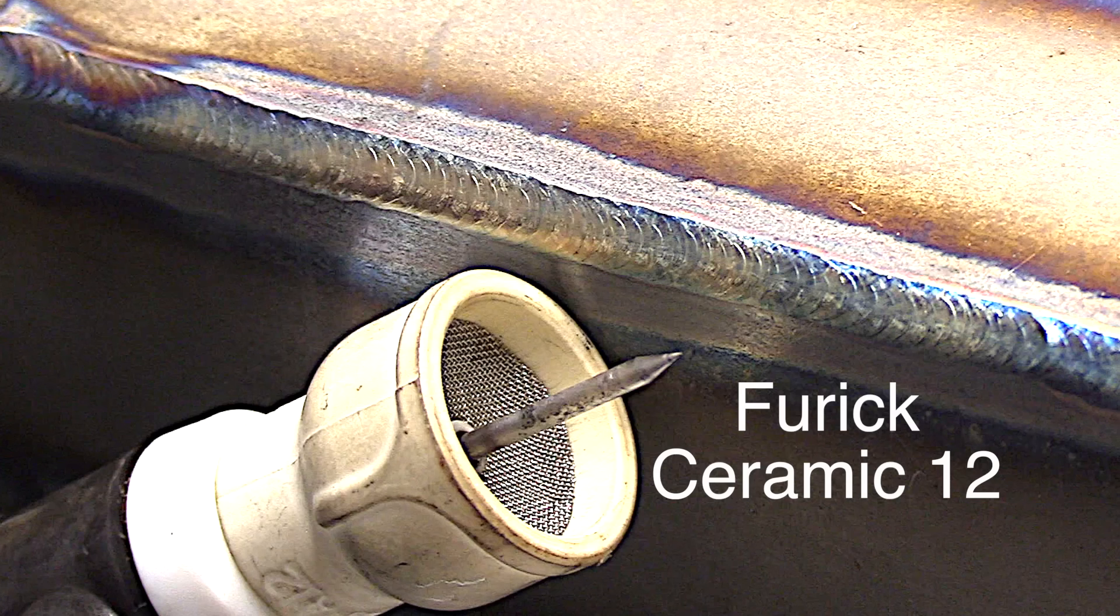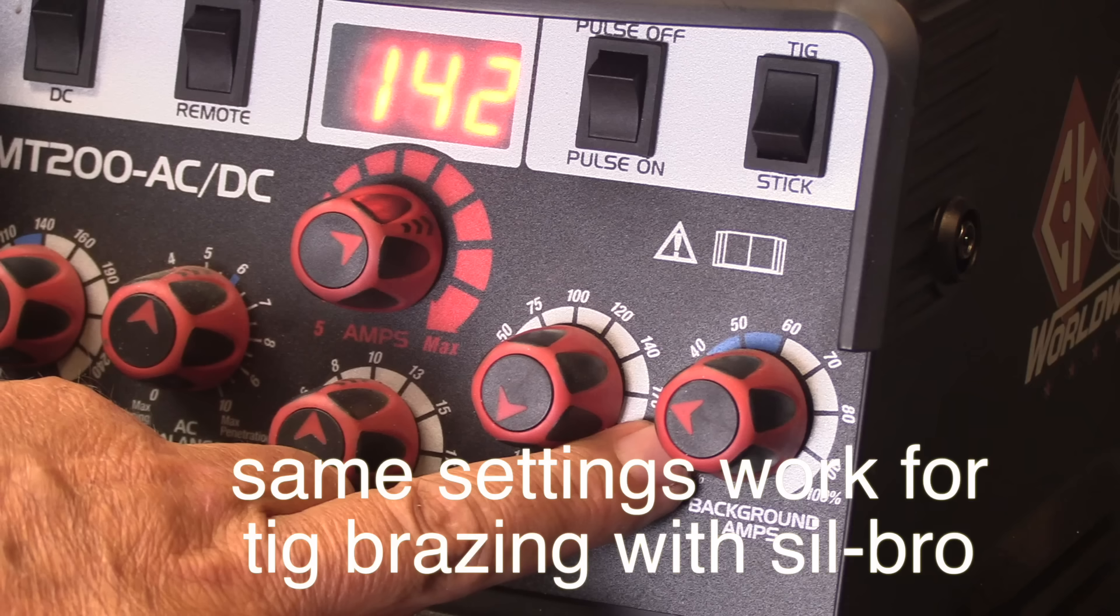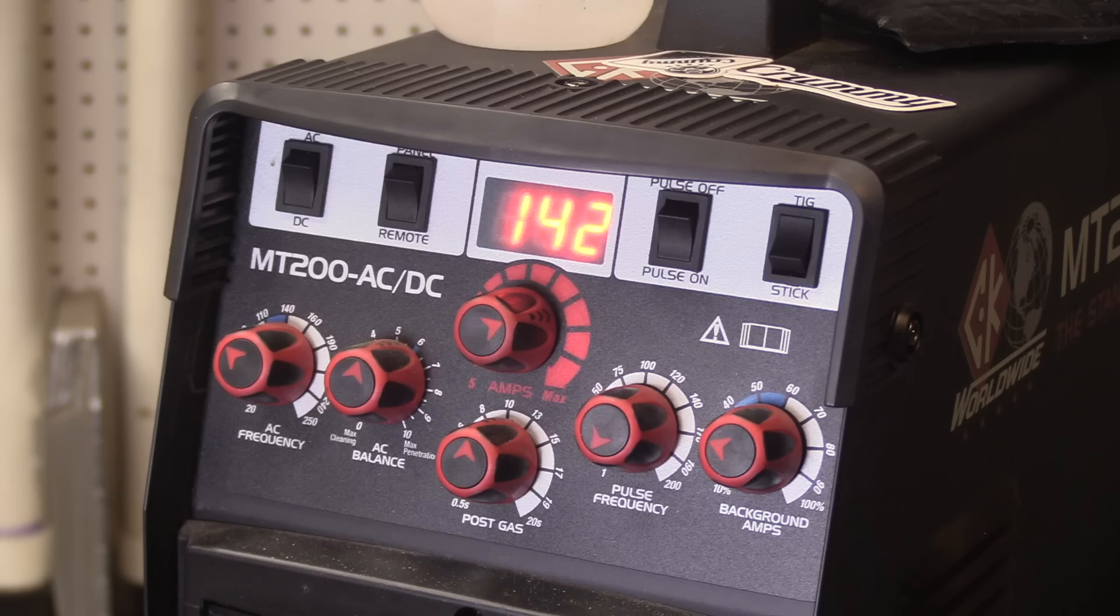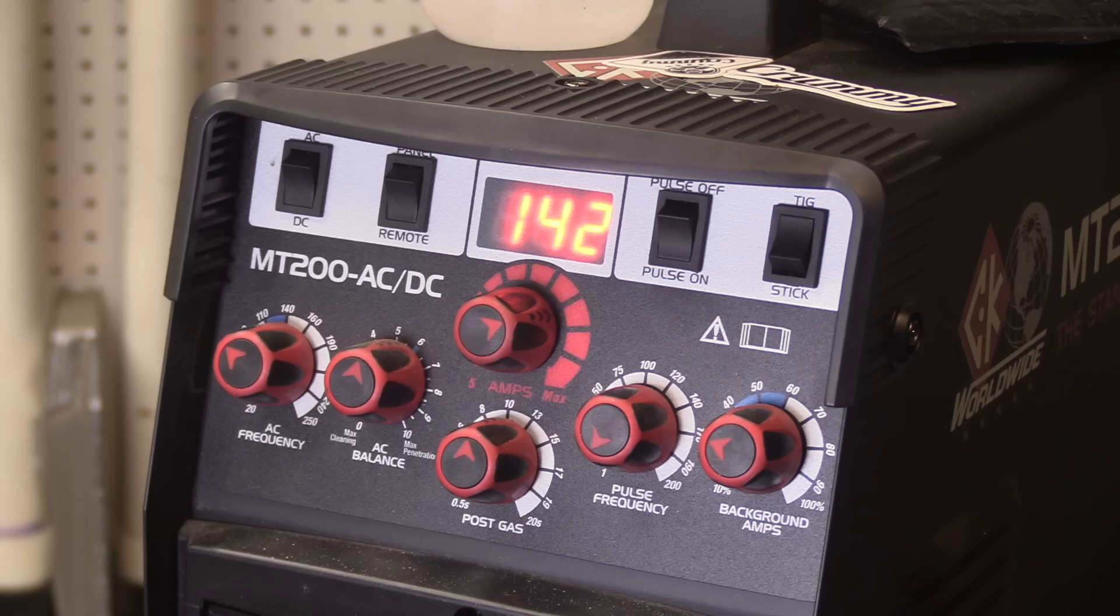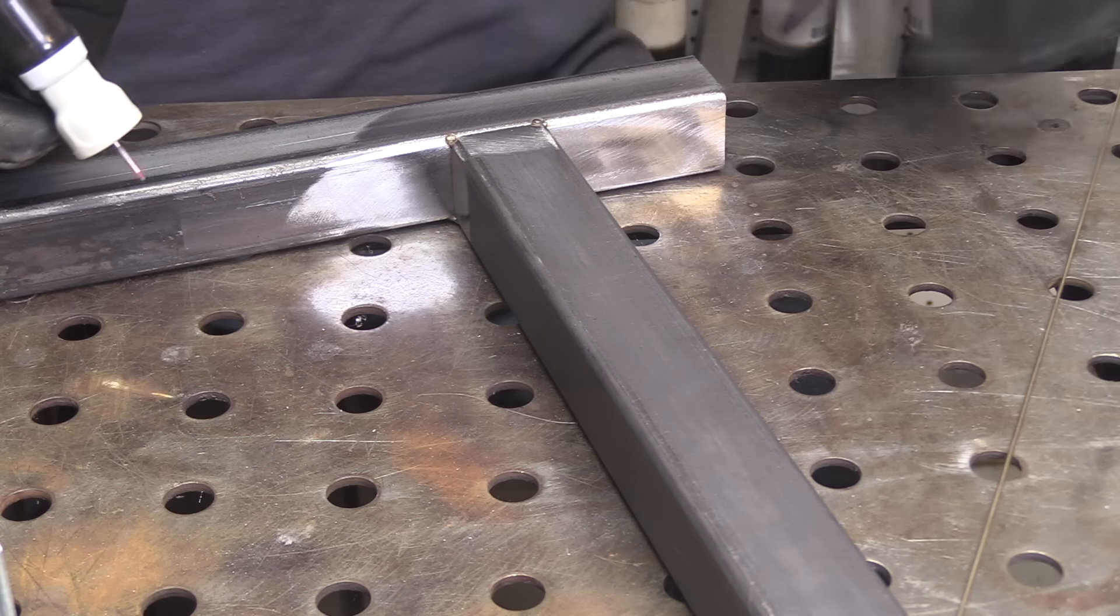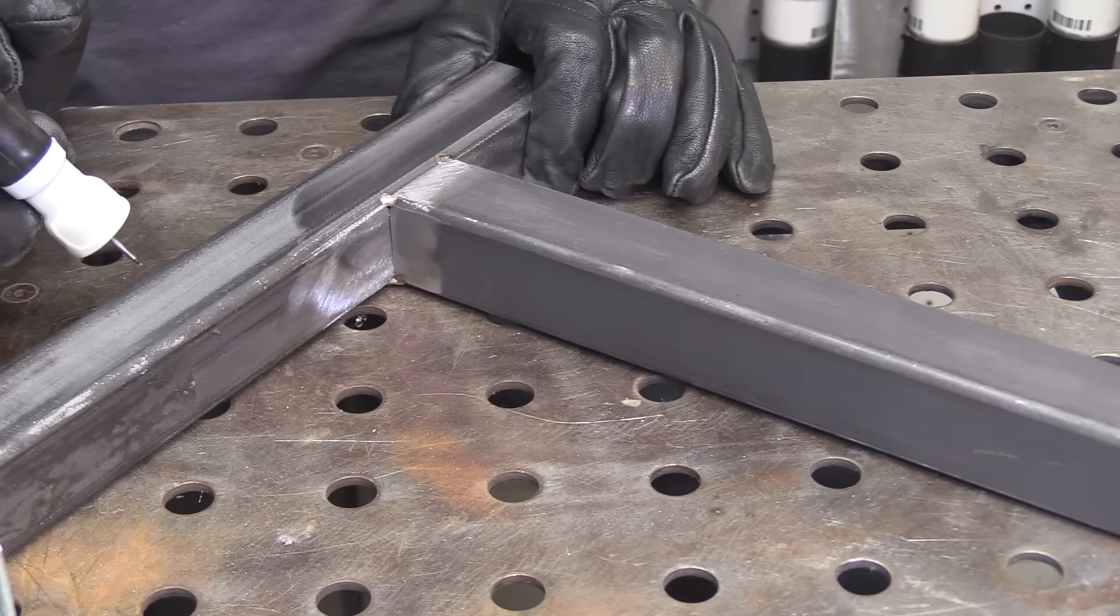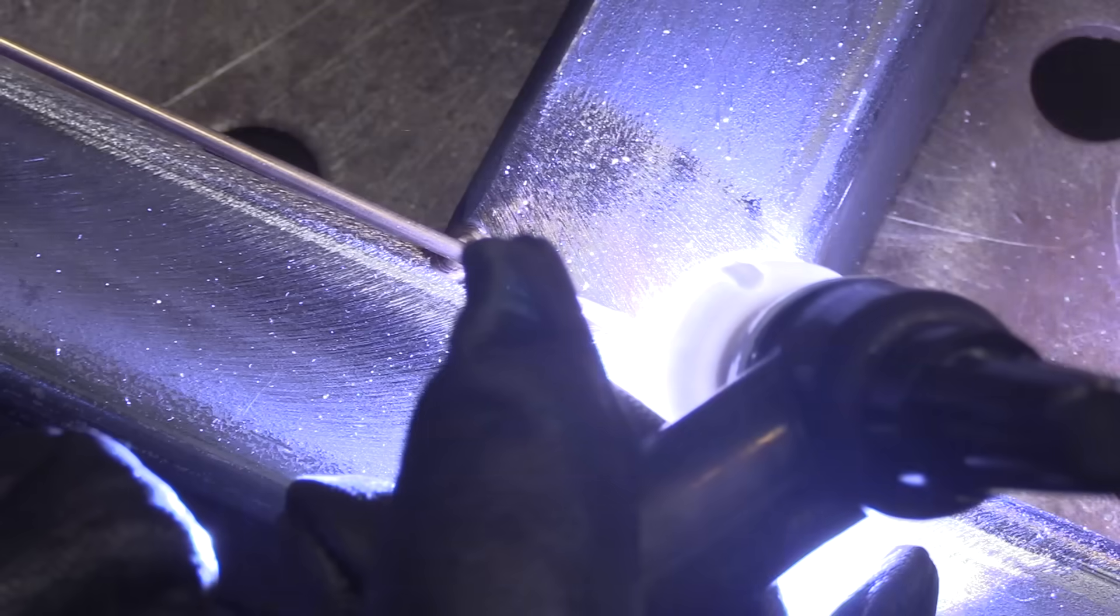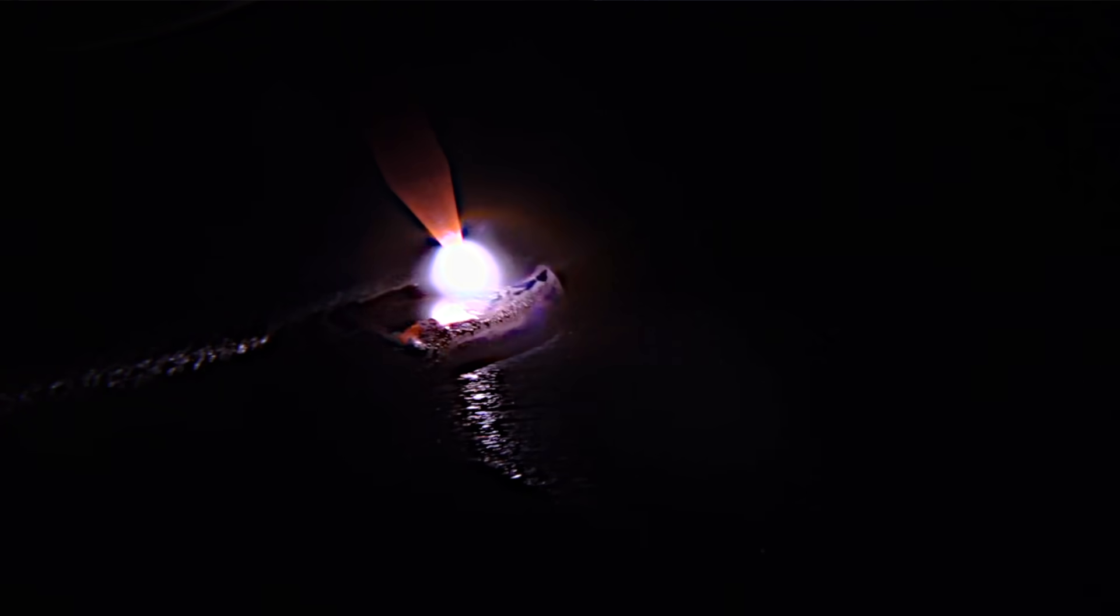Another thing that I have found that I really like to use pulse settings on is TIG brazing with silicon bronze. Using pulse with silicon bronze kind of keeps the heat down, keeps the oxide film under control and just really works really well. It's good for ornamental stuff like handles and hinges on industrial furniture and other ornamental things. It just provides a really cool look.